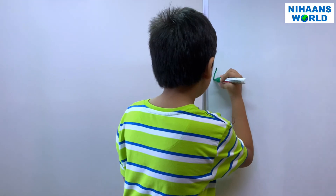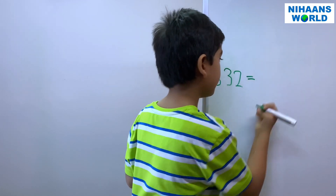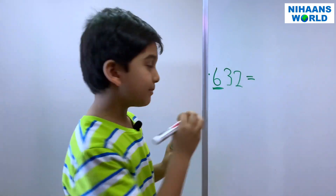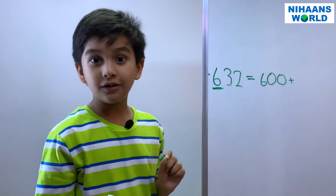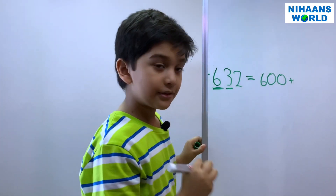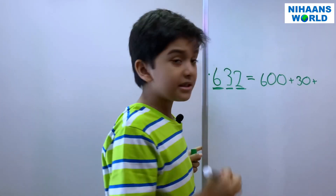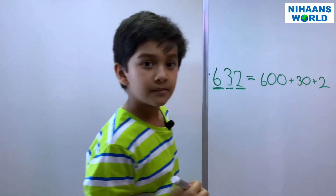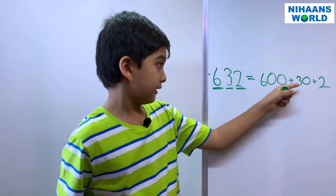Let's solve and expand another example: 632. The 6 is at the 100's place, so we write 600 plus. The 3 is at the 10's place, so 30 plus. The 2 is in the 1's place, so 2. So, 632's expanded form is 600 plus 30 plus 2.